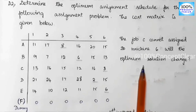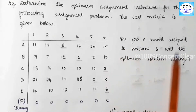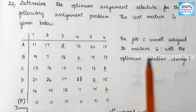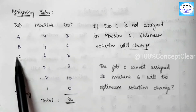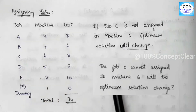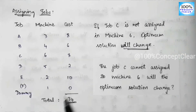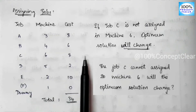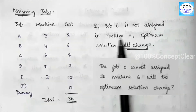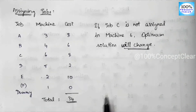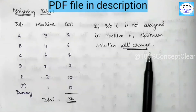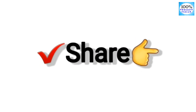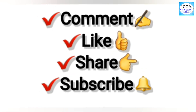We calculate the total cost based on these assignments. Note that Job C was originally constrained — it cannot be assigned to Machine 6 — so we check whether the optimum solution changes under that condition. If job C is not assigned to Machine 6, the answer changes accordingly. If you have any doubts, please like this video and share it with your friends. Subscribe to our channel for more topics. Thank you for watching.